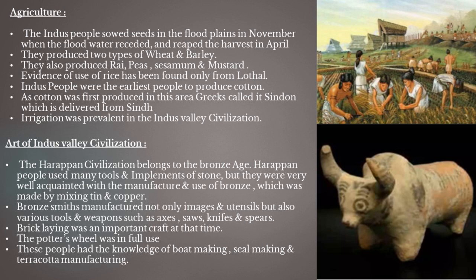The Harappan civilization belongs to the Bronze Age. Harappan people used many stone tools and implements, but were also well acquainted with the manufacture and use of bronze, made by mixing tin and copper. Bronze smiths manufactured not only images and utensils but also various tools and weapons such as axes, saws, knives, and spears. Brick laying was an important craft at that time. The potter's wheel was in full use, and people had knowledge of seal making, boat making, and terra cotta manufacturing.